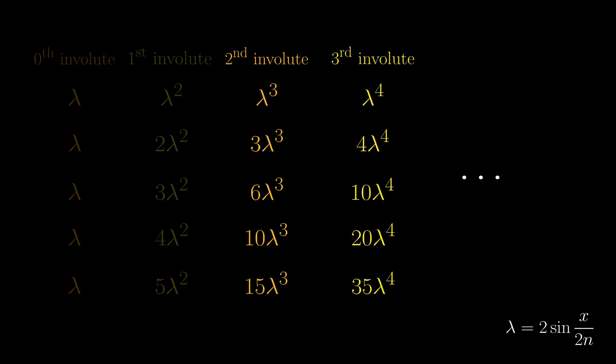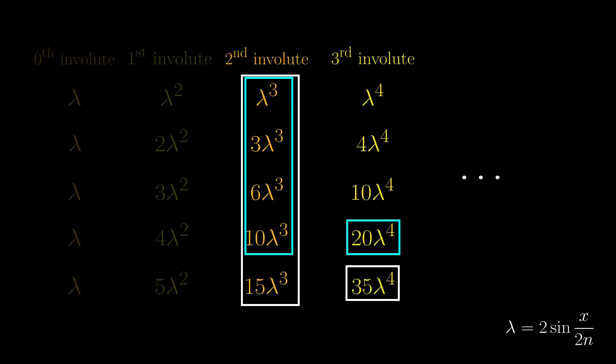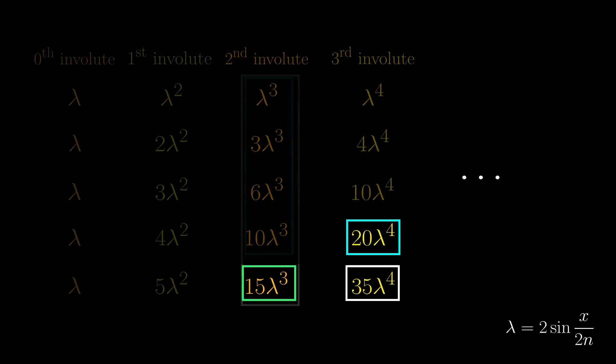For example, the way that we computed 35 was to sum up the right amount of coefficients in the previous column. But computing 20 follows a similar procedure of summing the previous column. The only difference is we haven't included 15. So to get 35, we simply add up the coefficient above it and the 1 to the left, which is exactly how the Pascal's triangle is constructed.